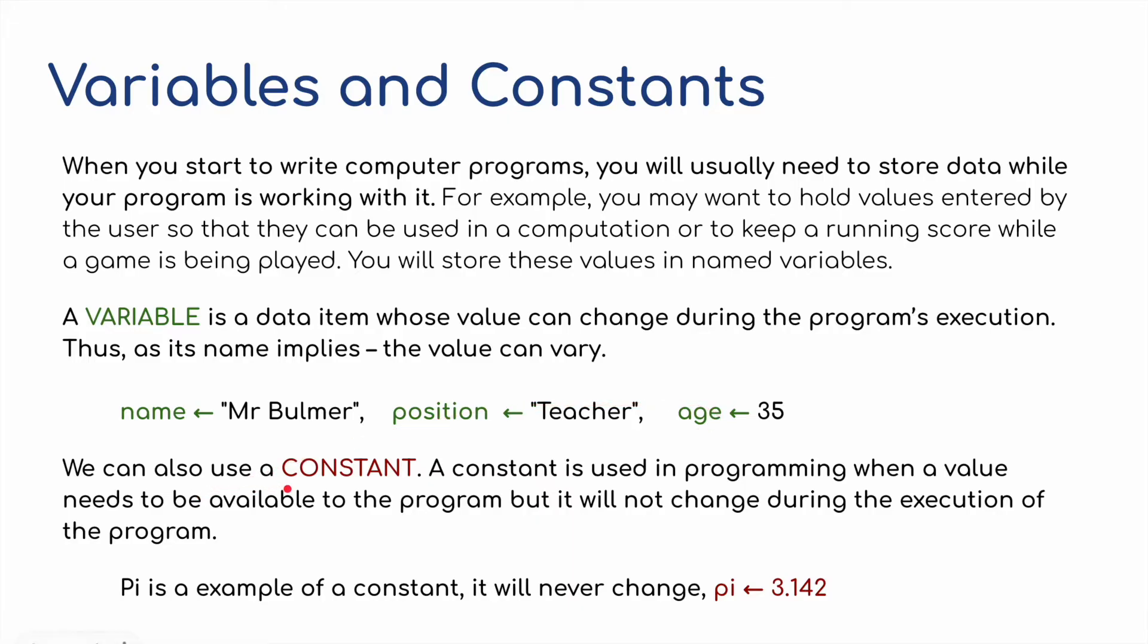Whereas constant, again, as the name implies, this is something that's fixed. A constant is used in programming when a value needs to be available to the program, but it will not change during the execution of the program. A good example of this might be pi. This is an example of a constant. Pi doesn't change, it's a fixed value. And we're going to use this later on in the video. We're going to use pi to three decimal places, 3.142.